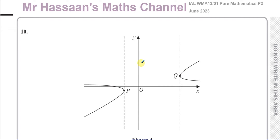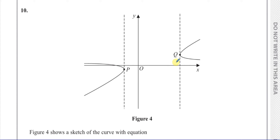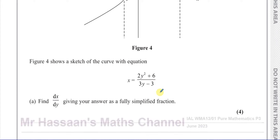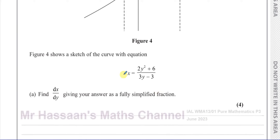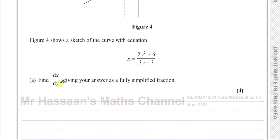This is the last question on this paper and we're given a diagram which shows a sketch of a curve with an equation that is a bit different than normal — x in terms of y. x equals 2y squared plus 6 divided by 3y minus 3. The question says find dx/dy, giving your answer as a fully simplified fraction.